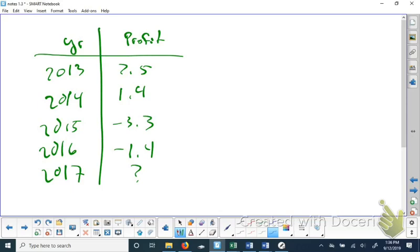So the problem says the table at the right shows the annual profits in thousands of dollars of a county fair from 2013 to 2016. What must a 2017 profit be in thousands or in hundreds of dollars? I don't like that they did that. To break even over the five-year period. So they want to just break even over the five-year period. So the question is, how much are they behind? So to find out how much they are behind, I'm going to have to add all these numbers together.